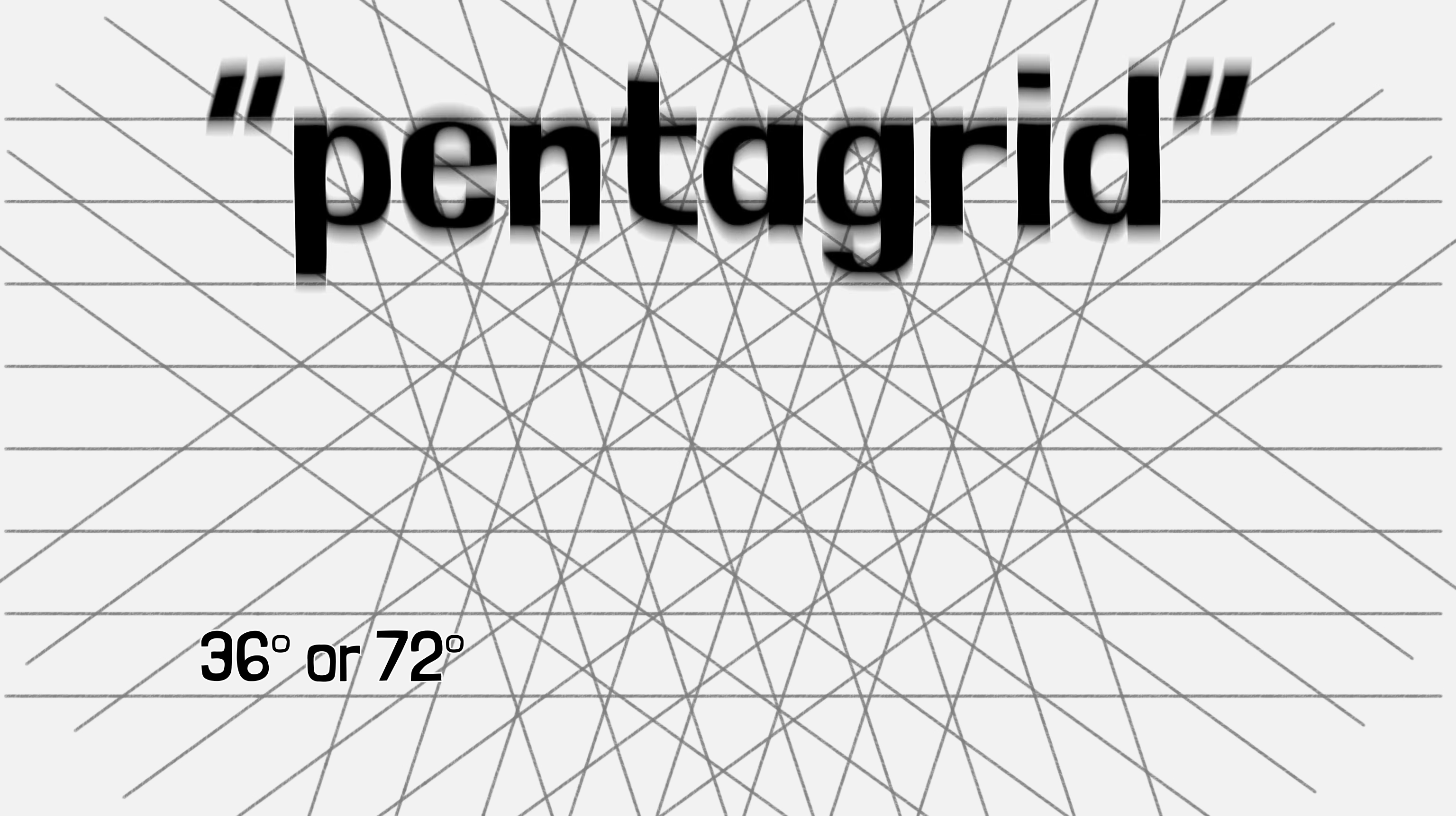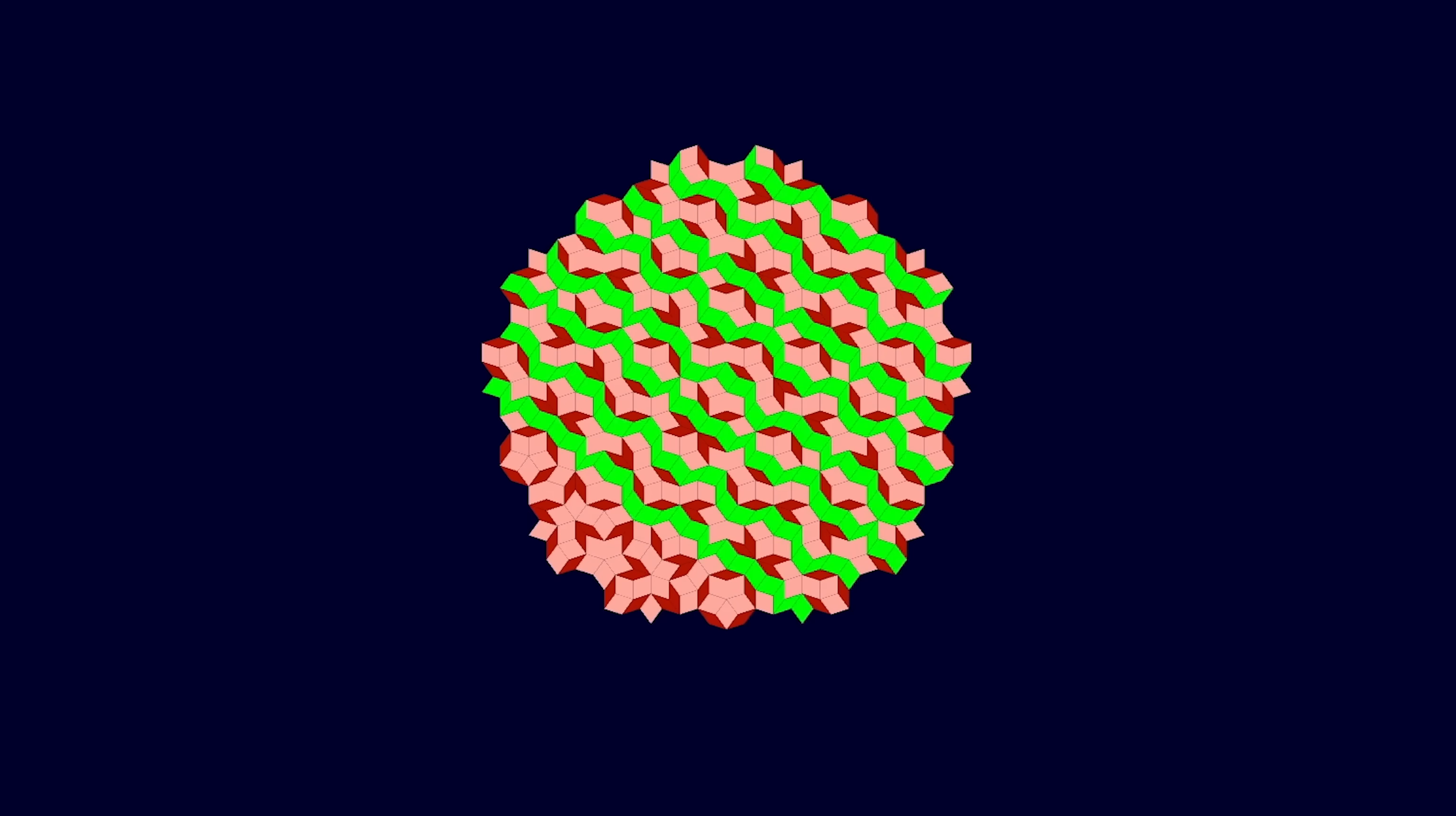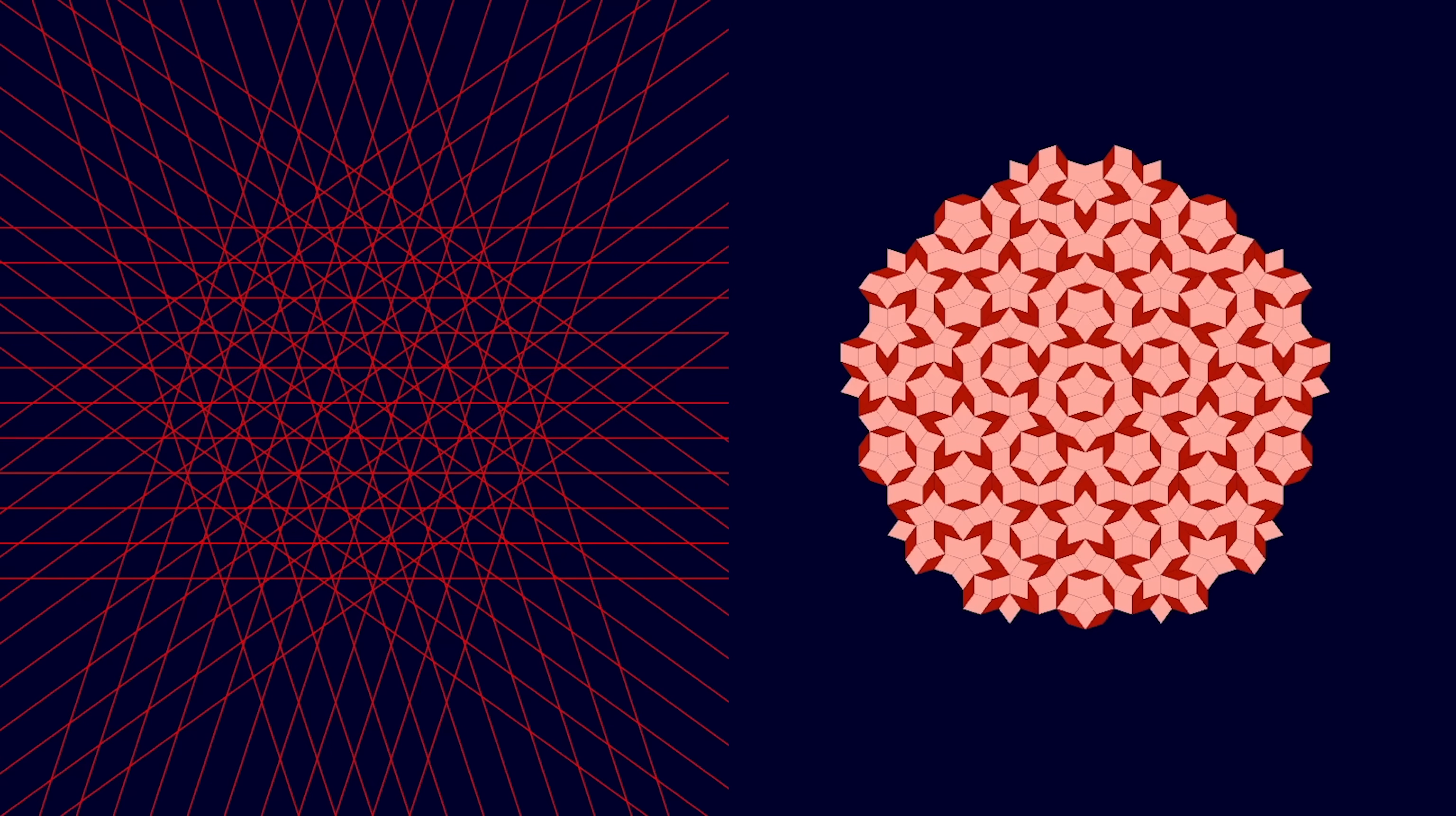And if you create a grid with five sets of lines evenly rotated from each other and intersecting at either 36 or 72 degrees, you get a pentagrid. Pentagrids are made up of five sets of parallel lines, and Penrose tilings are made up of five sets of parallel ribbons of tiles, because they're actually the same.